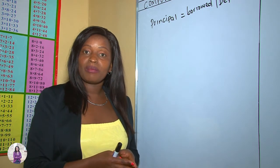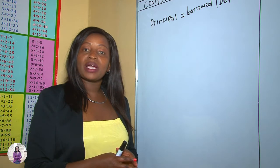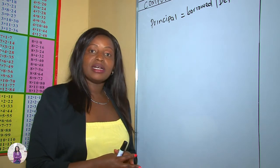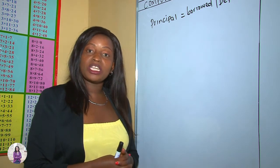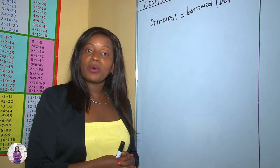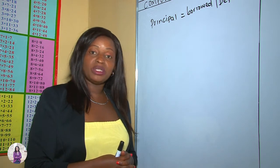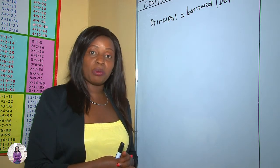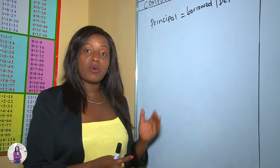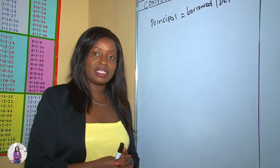This new total now serves as the principal amount for the following year as the money still stays in the bank. There are two ways you can work out compound interest: one is the traditional method, and the other is the formula method. Today we are going to focus on the traditional method.